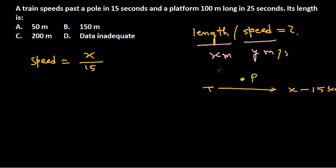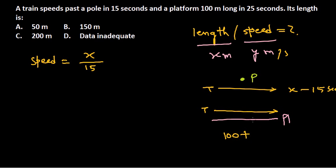The train also passes a platform of 100 meters long in 25 seconds. When a train passes a platform, the total distance covered is the length of the platform (100 meters) plus the length of the train (X). So the total distance is 100 plus X, and this is covered in 25 seconds.